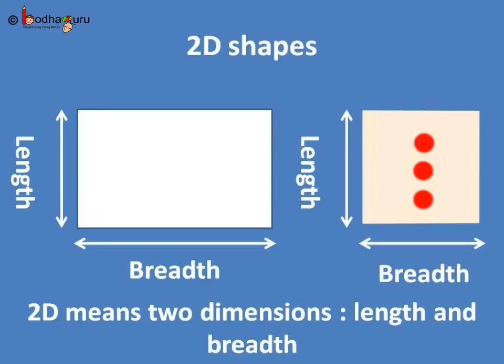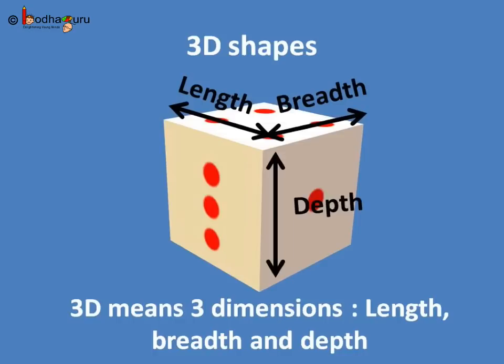length and breadth, which is also known as width. But all the solid objects which we can hold have one more dimension, which is depth.